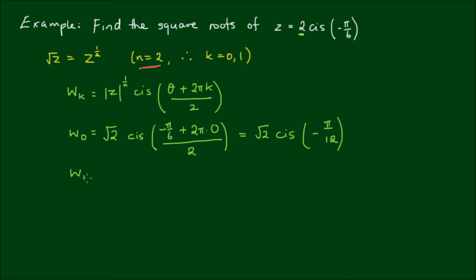The second root, w_1, equals √2 cis[(-π/6 + 2π(1))/2]. Now -π/6 plus 2π equals 11π/6, then divided by 2. So this equals √2 cis(11π/12).